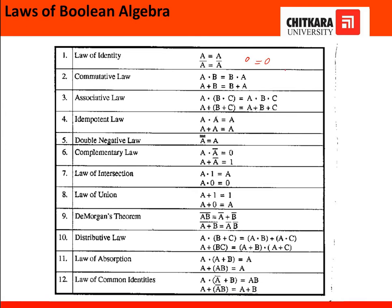Next is the commutative law, which says that a·b equals b·a, meaning 0·1 equals 1·0 — the answer will be same. We can write it in this form without affecting the output. Next is the associative law: we can write a·b·c with different groupings and the multiplication output remains the same.